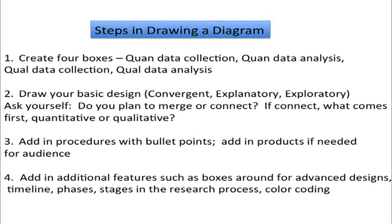There are some recommended steps for drawing a diagram. Begin by creating four boxes for quantitative and qualitative data collection and analysis, then add an interpretation element. Start by putting in the basic design first, then add the advanced design features. Indicate procedures at each step with bullet points, and also indicate products at each stage with bullet points. You can include a timeline, indicate phases, and even use color coding — for example, blue for qualitative research and green for quantitative research.